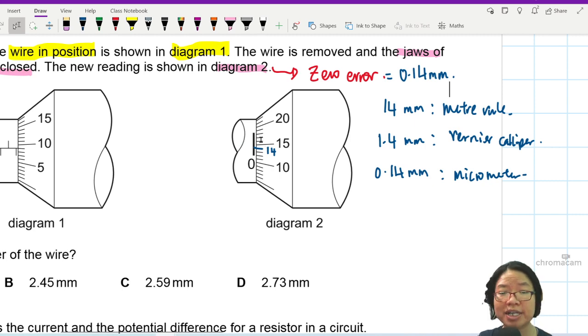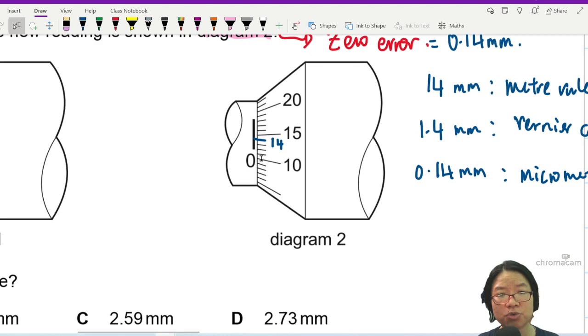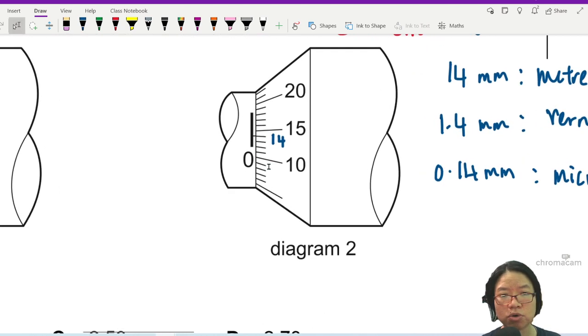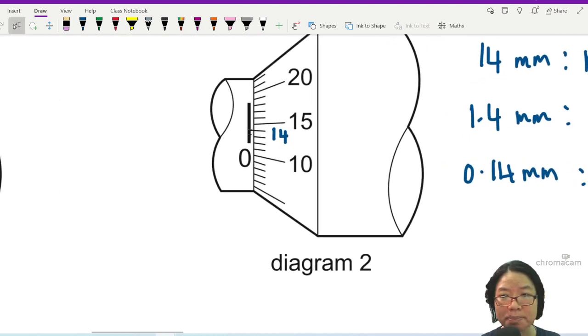This means whatever reading that you have, you need to minus 0.14 mm. The reading was supposed to be 0, but it was not 0. It was extra a bit. Extra a bit by 0.14 mm.